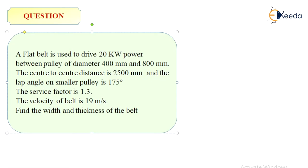A flat belt is used to drive 20 kilowatt power between pulley of a diameter 400 mm and 800 mm. The center to center distance is 2500 mm and the lap angle on smaller pulley is 175 degree. The service factor is 1.3. The velocity of the belt is 19 meter per second. Find the width and thickness of the belt.